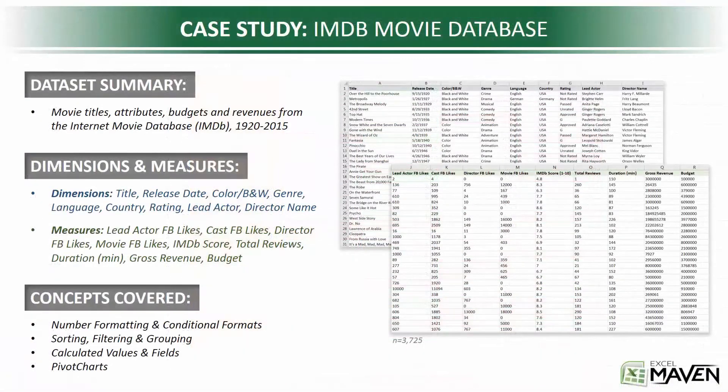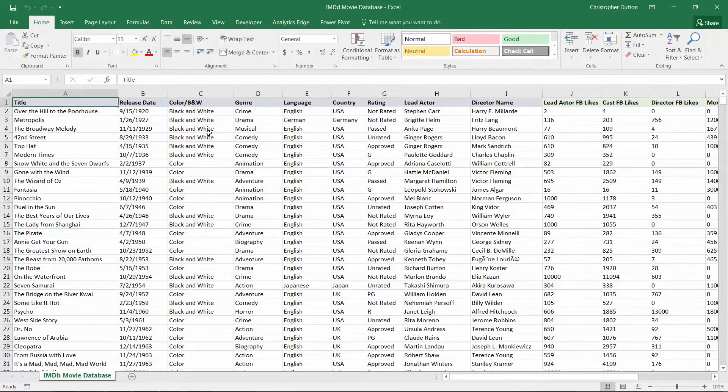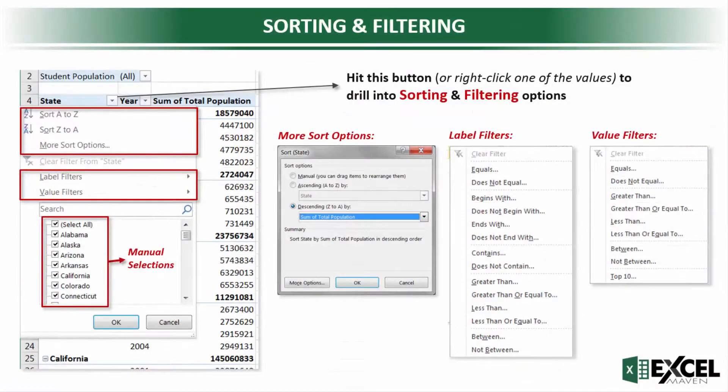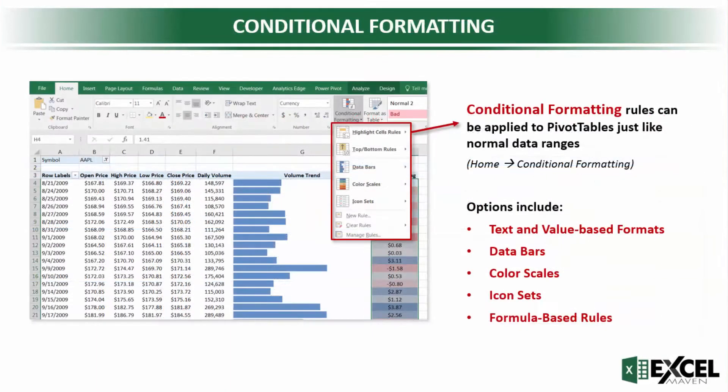Using sample data from the IMDB Movie Database, we'll start by reviewing some core pivot table functionality, including sorting, filtering, and grouping tools, calculated values and fields, and conditional formatting rules.